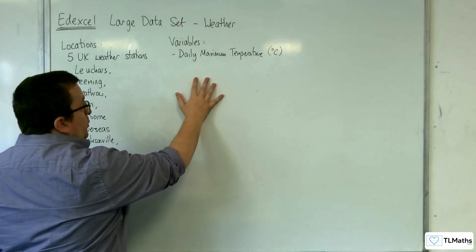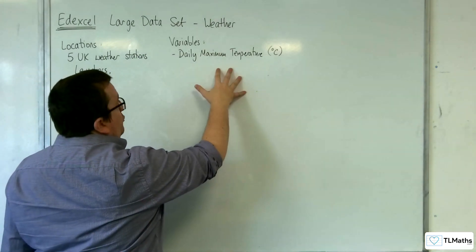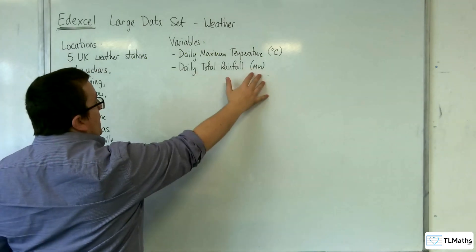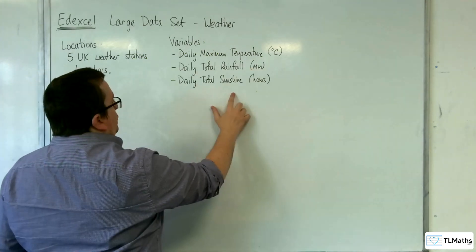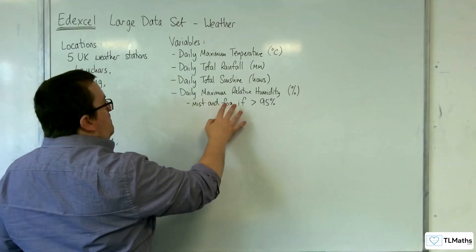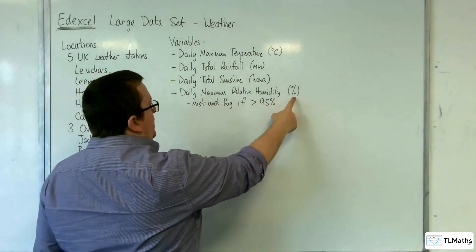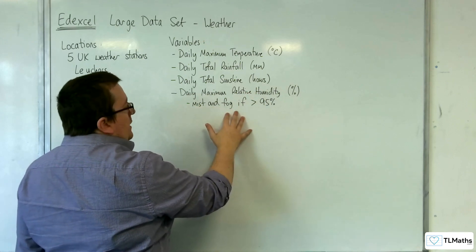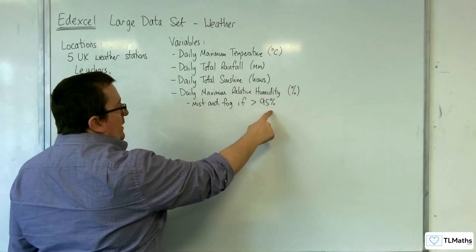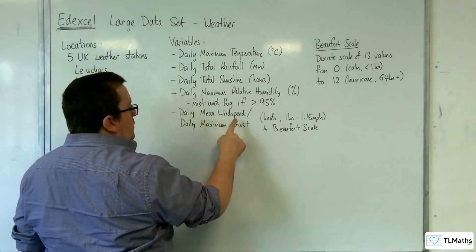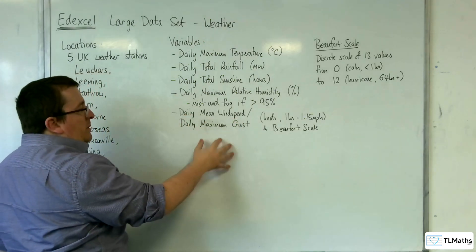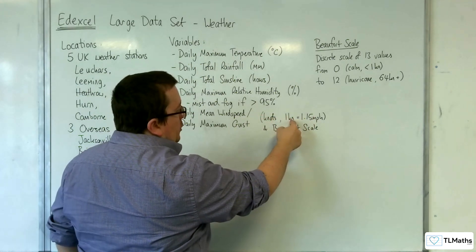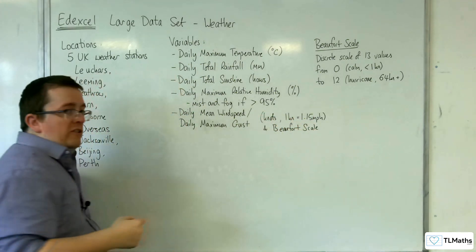As for the different variables that are recorded: daily maximum temperature is recorded in degrees centigrade; daily total rainfall is measured in millimetres; daily total sunshine is measured in hours; daily maximum relative humidity is given as a percentage — be aware that mist and fog is occurring if that's greater than 95%. Then you've got daily mean wind speed and daily maximum gusts, both measured in knots, where 1 knot equals 1.15 miles per hour.